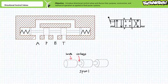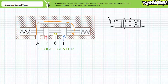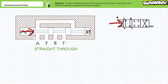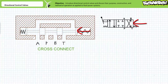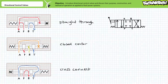Schematically, the closed center blocks all ports. The straight-through position routes P to A and B to T, and the cross-connect position routes P to B and A to T. The cutaway view confirms this: in the centered position, no connections exist between ports P, T, A, or B. When the spool moves to the straight-through position, the valleys connect P to A and B to T, while the lands block P to B and A to T. In the cross-connect position, the valleys connect P to B and A to T, while the lands block P to A and B to T.